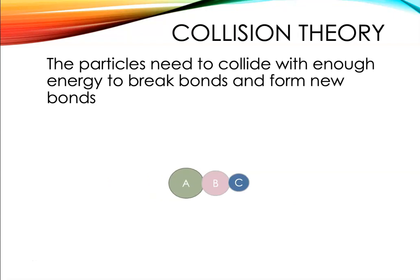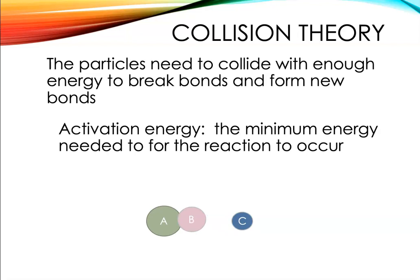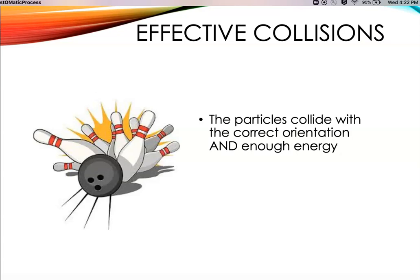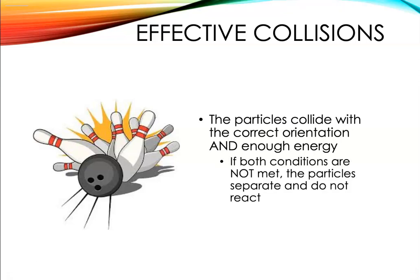When A collides with BC, we need to form a new bond between A and B and break the bond between B and C. The amount of energy the particles need when they're colliding is called the activation energy — that's the minimum energy needed for the reaction to take place. An effective collision leads to a reaction and new products, but both conditions — correct orientation and enough energy — must be met, or it's an ineffective collision. We can think of bowling as an analogy: the ball must travel down the center of the lane and hit the pins with enough energy. Both conditions need to be met.